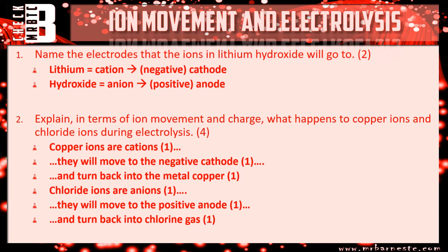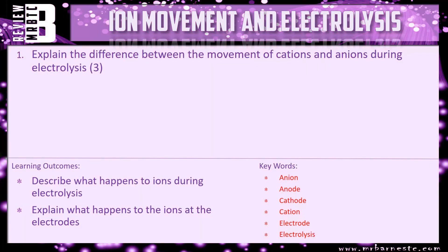Finally, a review question: explain the difference between the movement of cations and anions during electrolysis. This is asking for a summary of what we've covered in this video — in terms of charge, movement, where they go, and what happens. That brings this video to an end, thanks for watching.